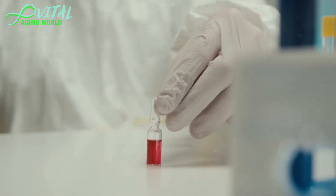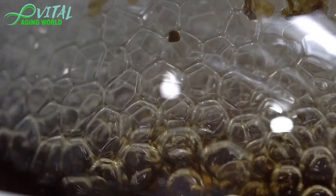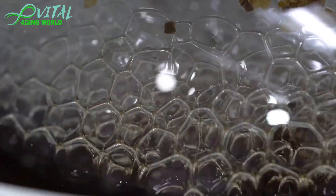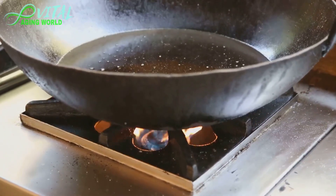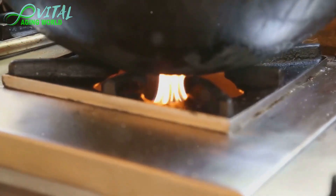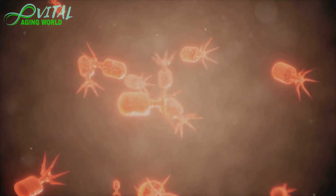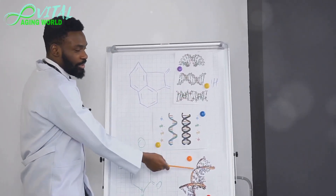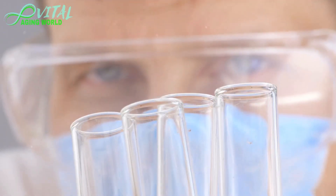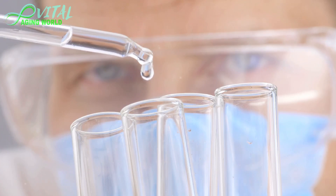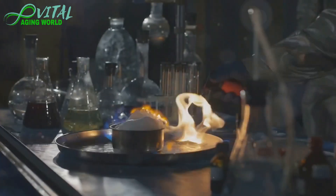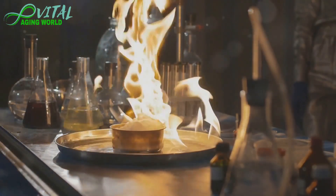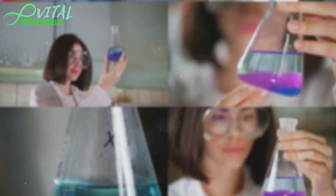Oxylipins are formed through a process called oxidation — a chemical reaction in which a substance reacts with oxygen and changes. This oxidation can occur due to external influences such as heat and light, but also through internal processes in the body. These internal processes occur in two ways: enzymatic processes, accelerated by special proteins called enzymes, and non-enzymatic processes, which occur without enzymes and can also lead to the oxidation of linoleic acid.